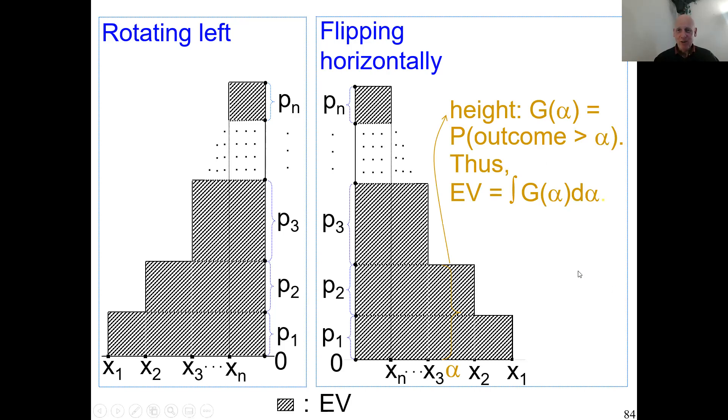The expected value of the lottery can be obtained as the integral of the rank. That's one way to calculate expected value—kind of proved it by you being my witness that it's correct.